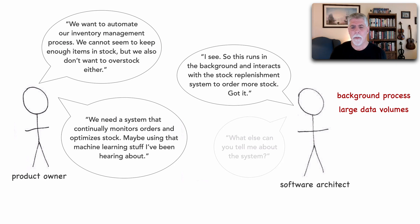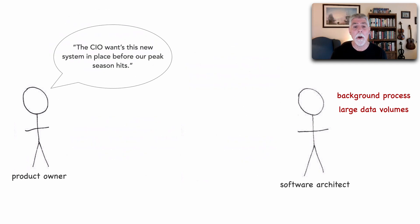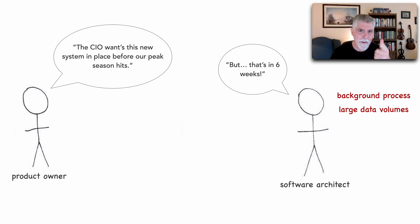The software architect asks: so what else can you tell me about the system? The product owner replies: the CIO wants this new system in place before our peak season starts. The architect reacts: but wait — that's in six weeks! So now what's on the architect's mind to help with this decision-making process are time constraints.